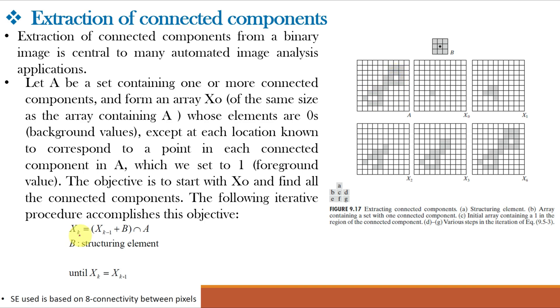If the ones are 4-way connected or 8-way connected then they are a part of connected components in this image. Here xk is equal to xk minus 1 dilation with B whole intersection with A. Initially we can choose any one as x0 dilate it with B and intersection with A.